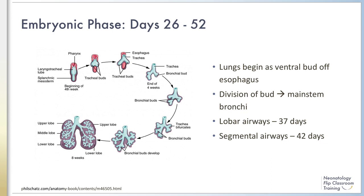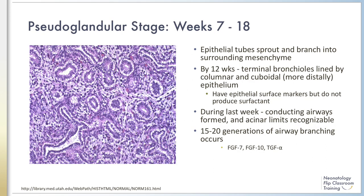Lung development involves interactions between all three germ layers and is a highly regulated process. Ectoderm creates the neuroendocrine cells, mesoderm becomes the mesenchyme, and endoderm becomes the pulmonary epithelium. The embryonic lungs originate as a bifurcation at the posterior end of the laryngotracheal groove during the third to fourth week of gestation. The lung bud is induced by underlying mesenchyme to form main stem bronchi, which are well developed by 33 days of gestation. Lobar airways are notable at 37 days, with formation of the segmental airways by 42 days of gestation.